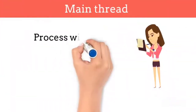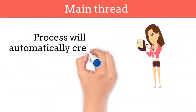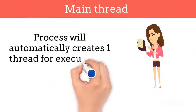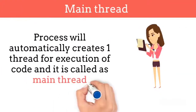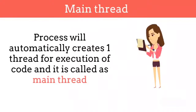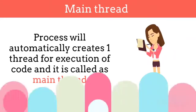Every time a program executes, it is converted into a process. And by default, the process will create one main thread which will execute all of our code. So even if you are not manually creating a thread, JVM or any other programming language will automatically create one main thread for you.